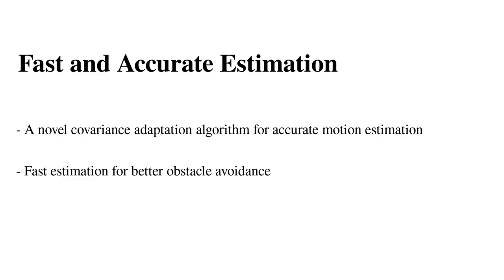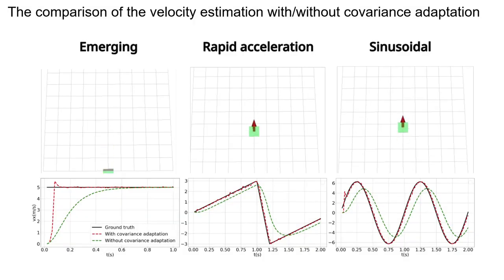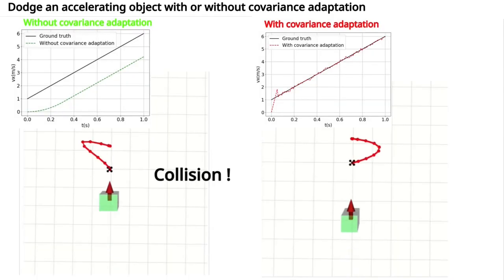The second part of the system is a fast and accurate motion estimator. With our proposed method, we achieve precise velocity estimation for objects with different motion types. The fast estimation enables better obstacle avoidance.